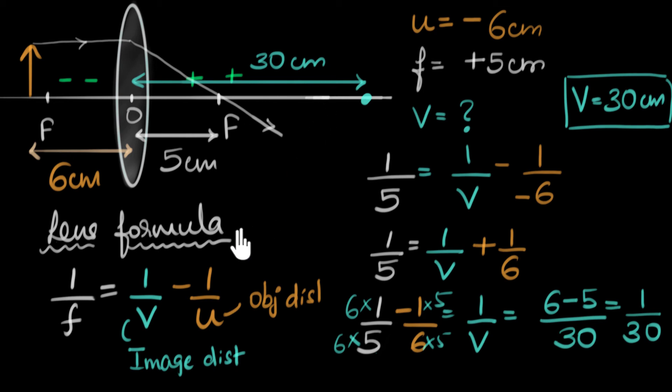So, to quickly summarize what we learned in this video. The lens formula connects the focal length, image distance, and the object distance. So, whenever we are given any two of these, we can find the third one using this formula.